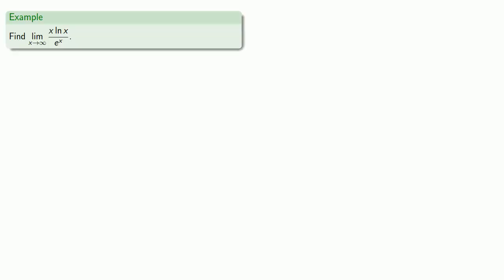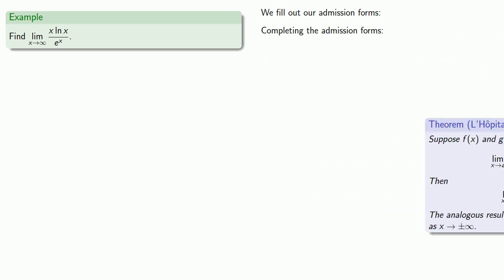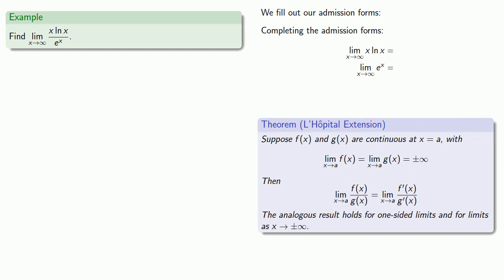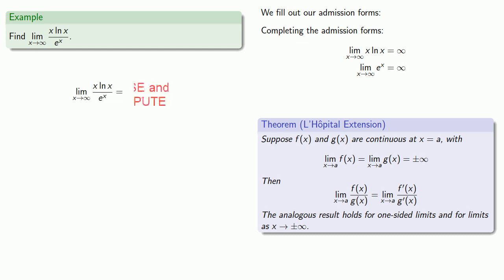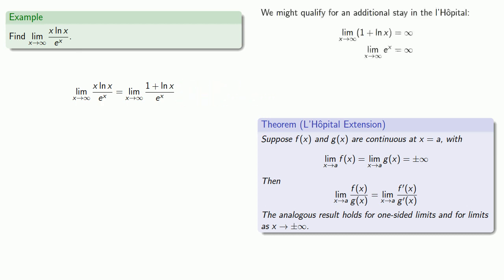To find the limit as x goes to infinity of log x / e^x, we fill out our admission forms — for the other L'Hospital. We verify that both numerator and denominator go to infinity. We then replace numerator and denominator with their derivatives. L'Hôpital's rule does not give us a limit; it just replaces one limit with a different limit. We notice numerator and denominator both still go to infinity.